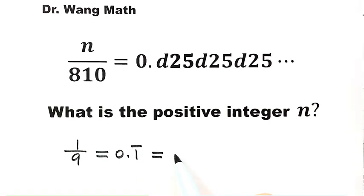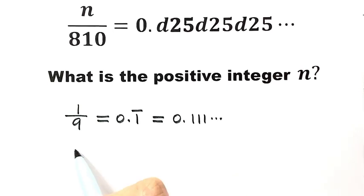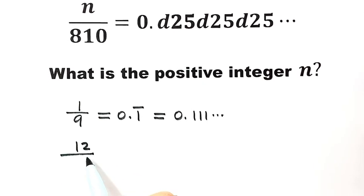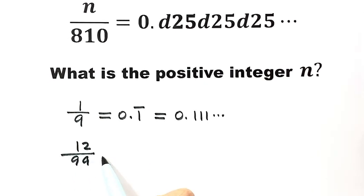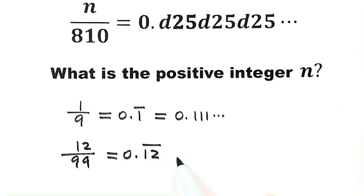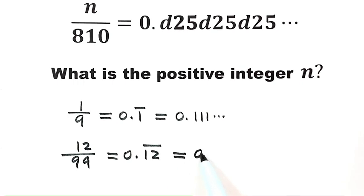12 over 99 equals 0.12 repeating, which is the same as 0.121212 and so on.